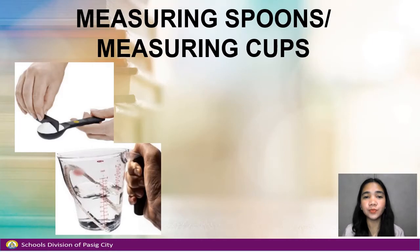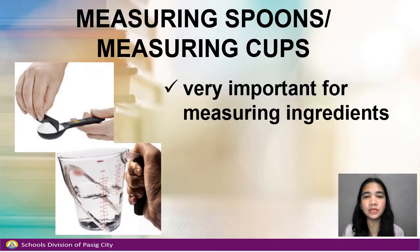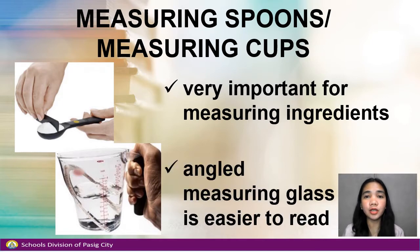Measuring spoons and measuring cups. Measurement is very important in baking and so are measuring tools. We use measuring spoons and cups for dry and liquid ingredients. An angled measuring cup is easier to read when measuring liquid ingredients.